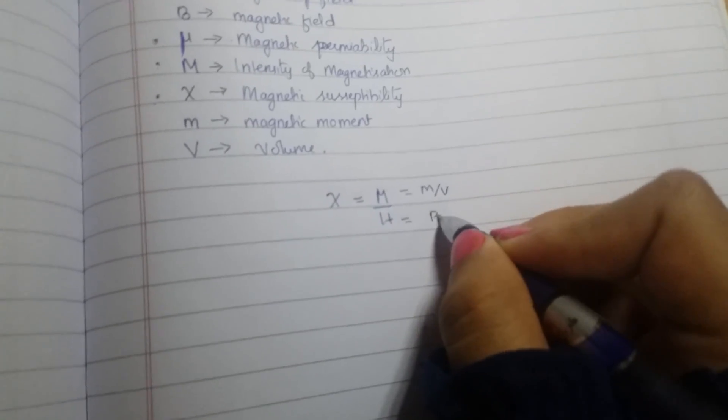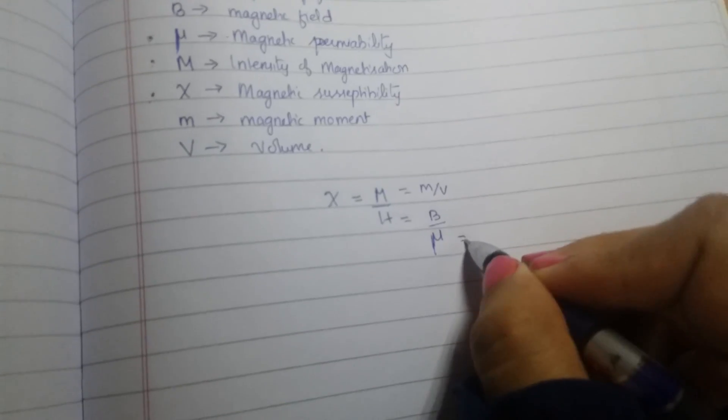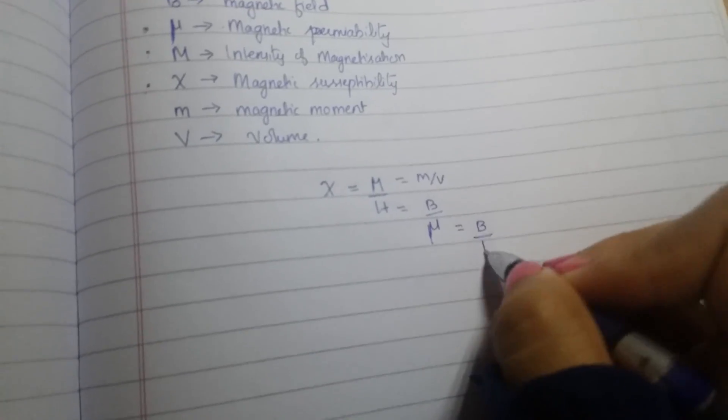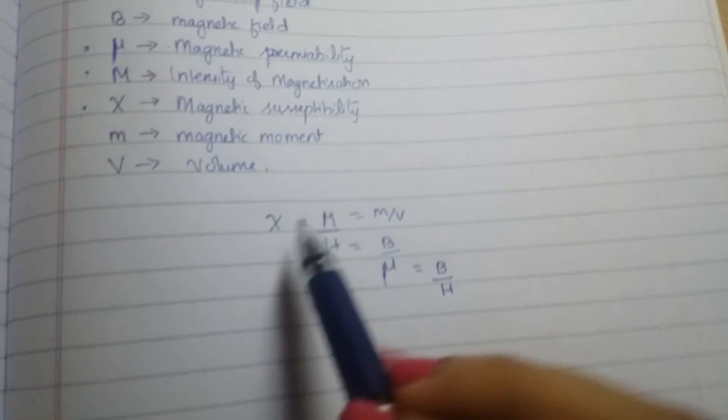H is equal to B by Mu and Mu is equal to B by H. Okay, so these are some easy tricks.